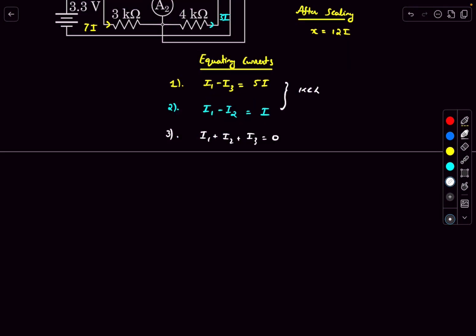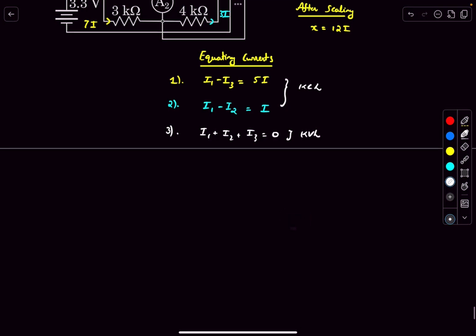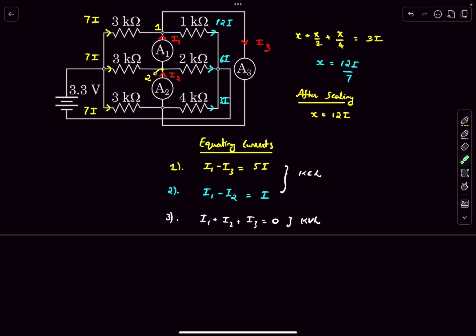So now all we have to do is solve the system of equations, but we also have to determine the value of i. So for that we can just apply KVL in any of the loops containing the resistor and the battery.